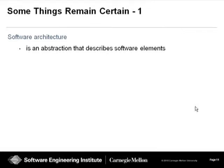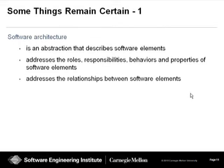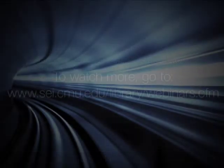The software architecture tells us what the major elements of a system are — their roles, responsibilities, behaviors, and properties. It also tells us the relationships between all of those elements: which elements connect to each other, which elements interact with each other, and when and how they connect and interact. Relationships also includes the properties of those connections and interactions — for example, how fast, how secure, or how available a connection has to be.